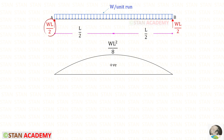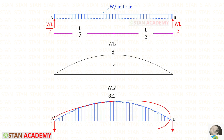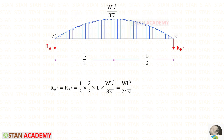The reactions will be wl upon 2. This is the conjugate beam — we need to divide the moment by EI. Let us keep the loading in the conjugate beam upwards, so the reactions should be downwards. Let us find the reactions R_A' and R_B'. This parabola is symmetrical, so it is very easy to find the reactions.